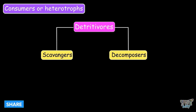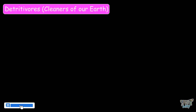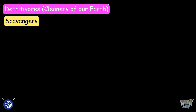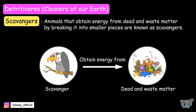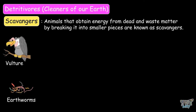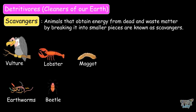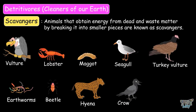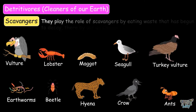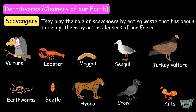Now let's learn about detritivores, also known as the cleaners of our earth. Animals that obtain energy from dead animals and waste matter by breaking it into smaller pieces are known as scavengers. For example, vultures, earthworms, lobsters, maggots, hyenas, seagulls, crows, turkey vultures, and ants. They play the role of scavengers by eating waste that has begun to decay, thereby acting as the cleaners of our earth.